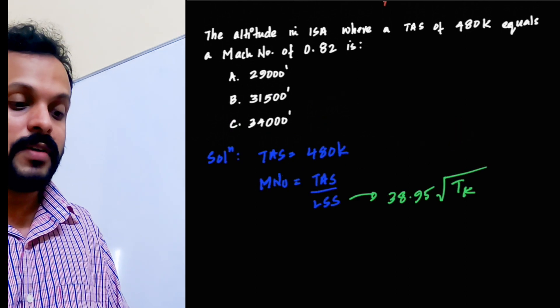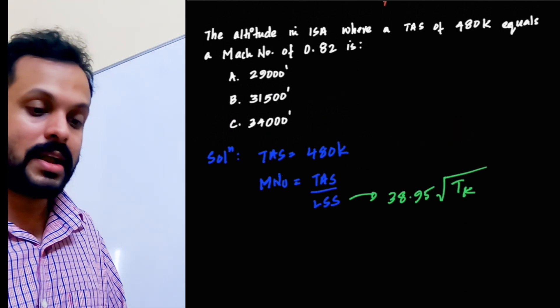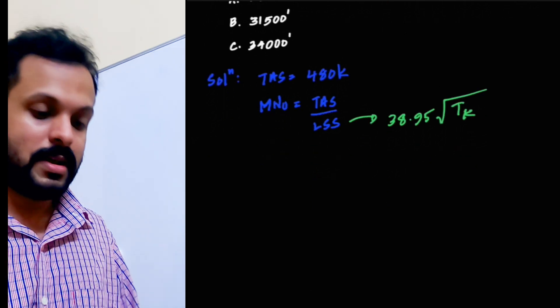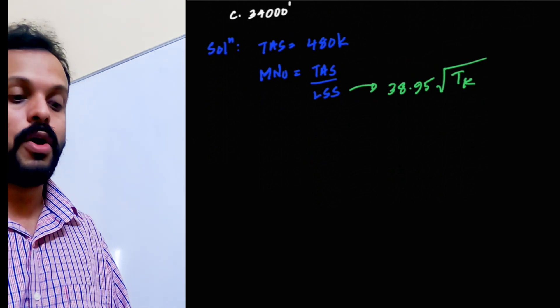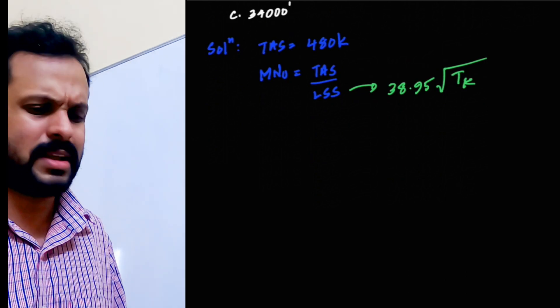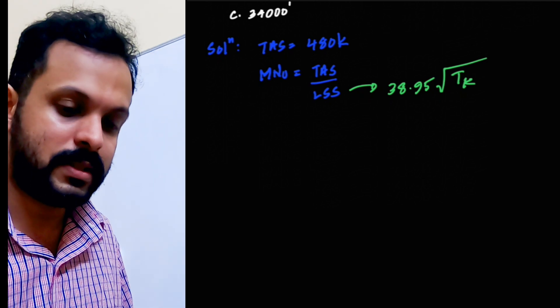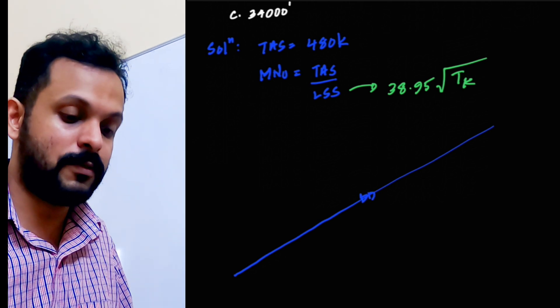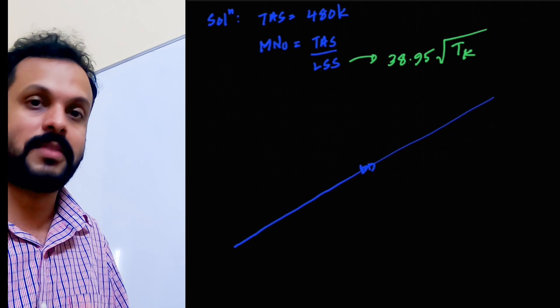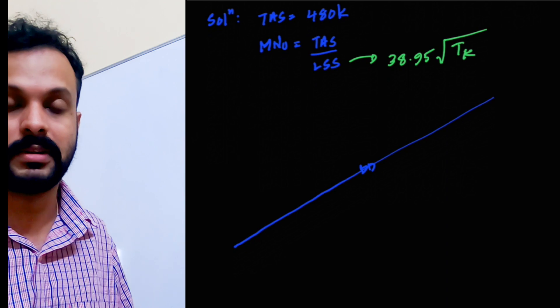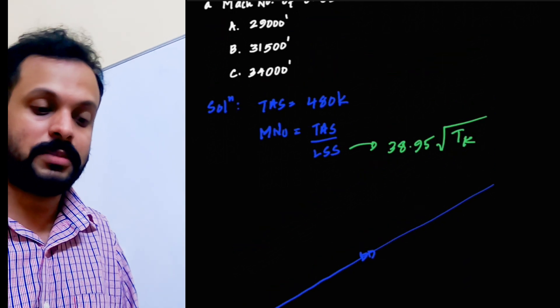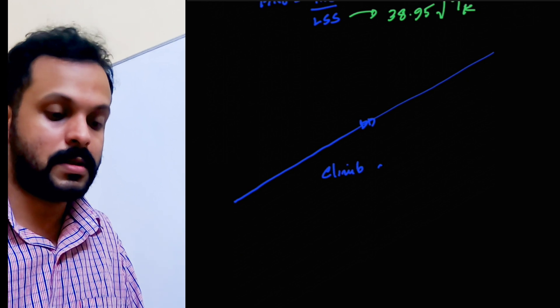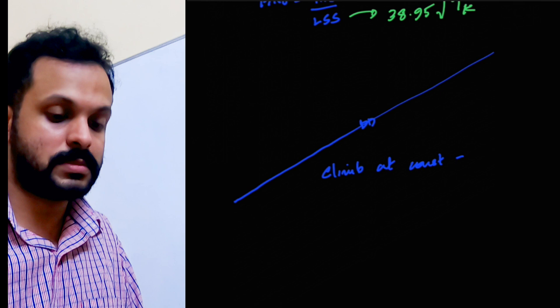And here, you are asked to find out that particular altitude where a TAS of 480 knots will correspond to a particular Mach number. Now, let us consider a very steady climb, like say for example cruise climb or something. Let us assume an aircraft is climbing all the way straight. Practically, we always climb at a constant indicated airspeed. We have seen that in detail in the performance session. But for the benefit of this particular question, let us assume we are climbing at constant TAS.